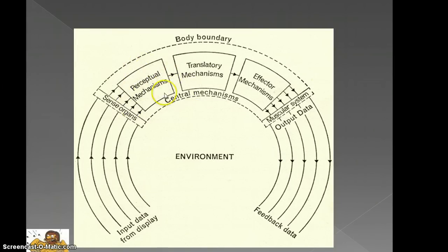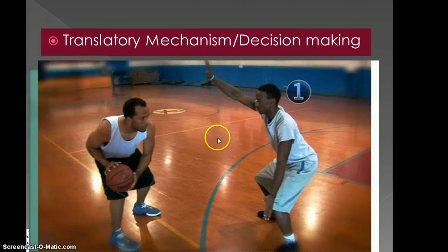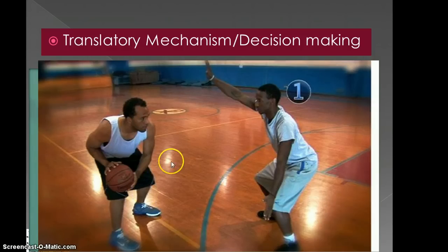So we've now got our perceptual mechanisms — we've received the information from our sensory organs, taken it on board, and worked out what information is important to us. We're now going to move on to the next section: the translatory mechanisms. With the information we have, checked against our long-term memory, we move into the translatory mechanisms where we're transferring this information and trying to formulate some kind of decision. In this instance, this player has more than one option — he could either drive towards the basket, try and shoot, or pass — and the translatory mechanism is where you work out which one you're going to do.